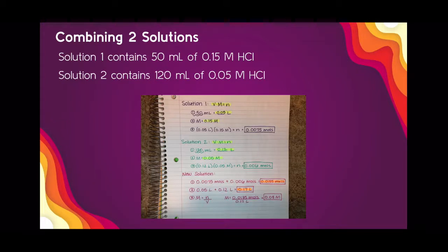Notice that the molarity of the new solution is in between the molarities of the starting solutions — 0.08 molar is between 0.05 molar and 0.15 molar. If you get a new molarity that is above or below both starting molarities, you did something incorrect. It has to be in between. It won't always be directly in the middle; depending on how much of each solution you use, it could be closer to one versus the other, but it must be in between both.